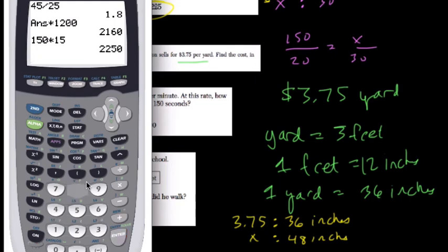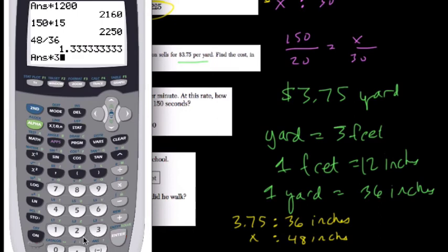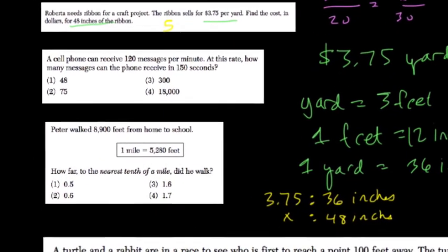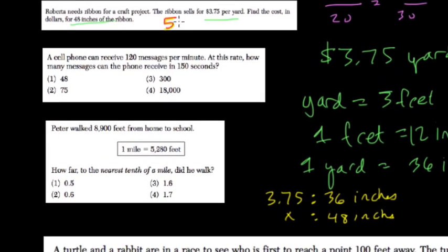than 36. 48 divided by 36 is one and a third. Times $3.75 is five, so it should be $5 for that larger size ribbon.